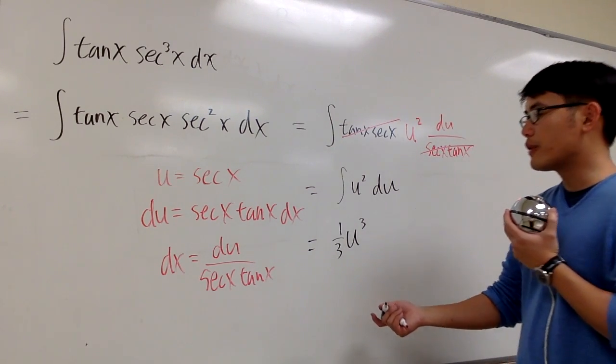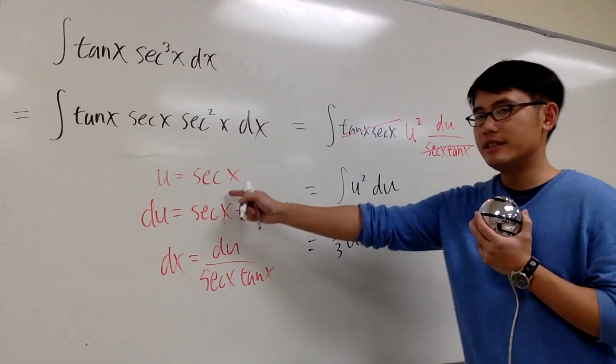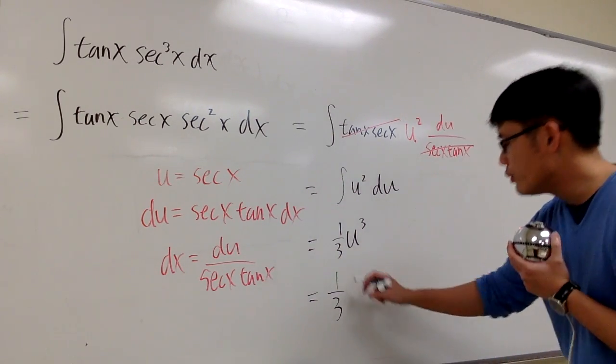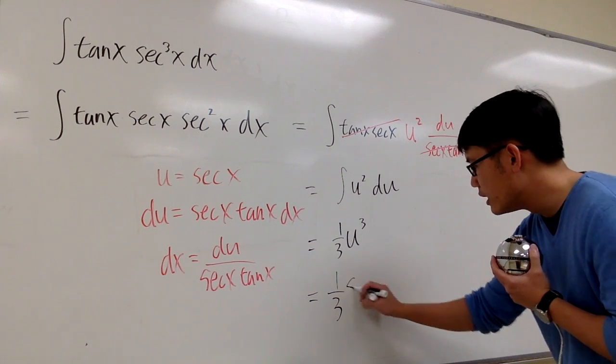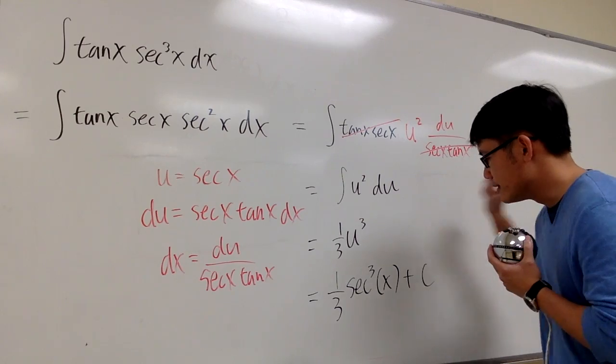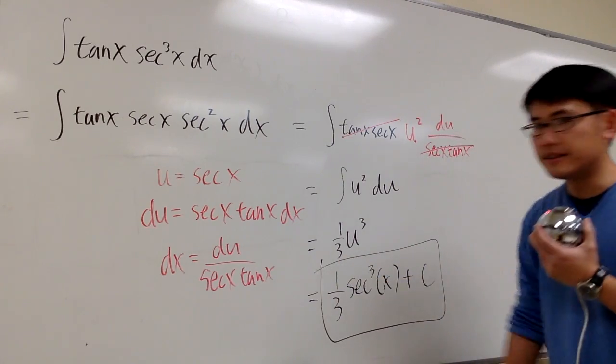But then, of course, we also know that u is equal to secant x. So we are done. After we replace the u back into x, we have altogether one-third secant to the third power x plus c. This is the answer. That's it.